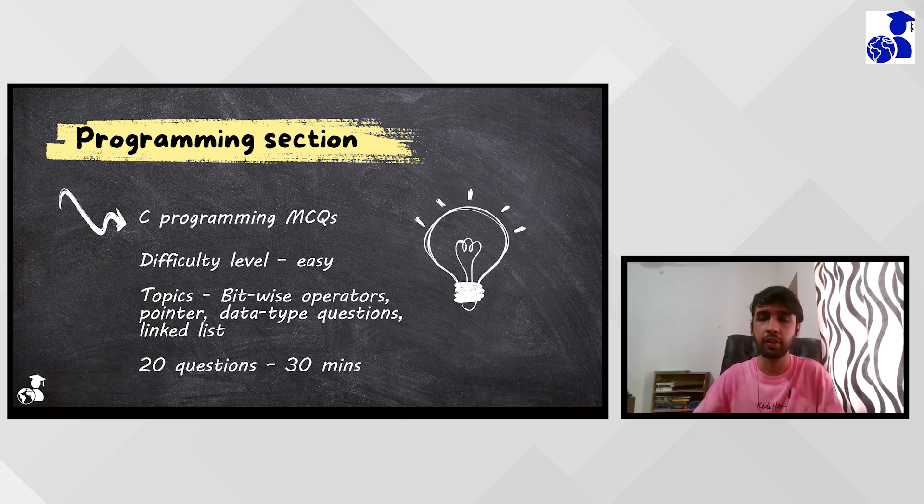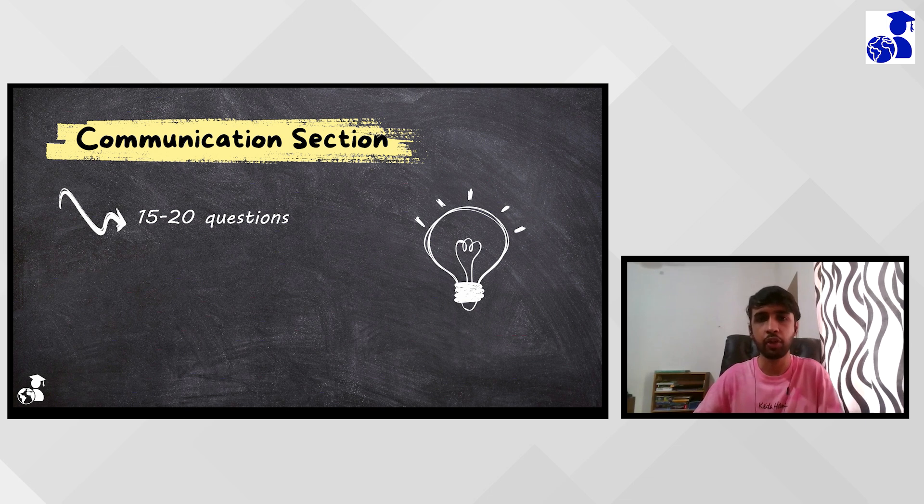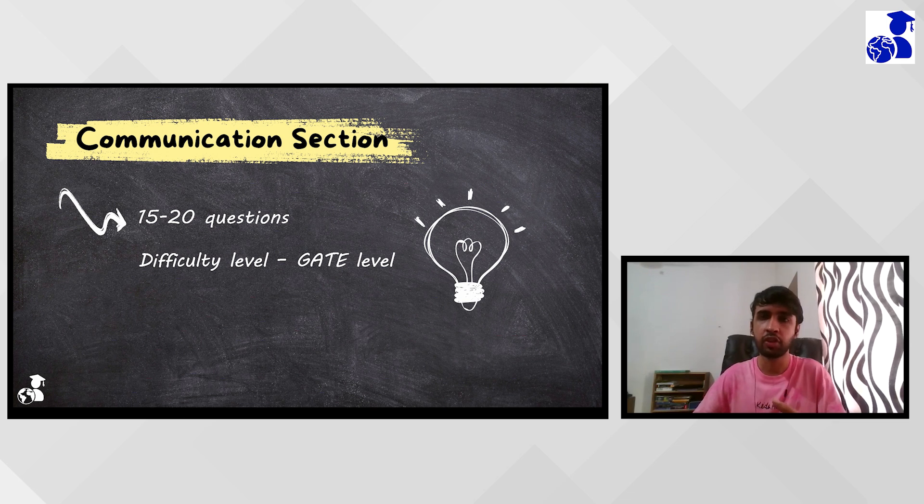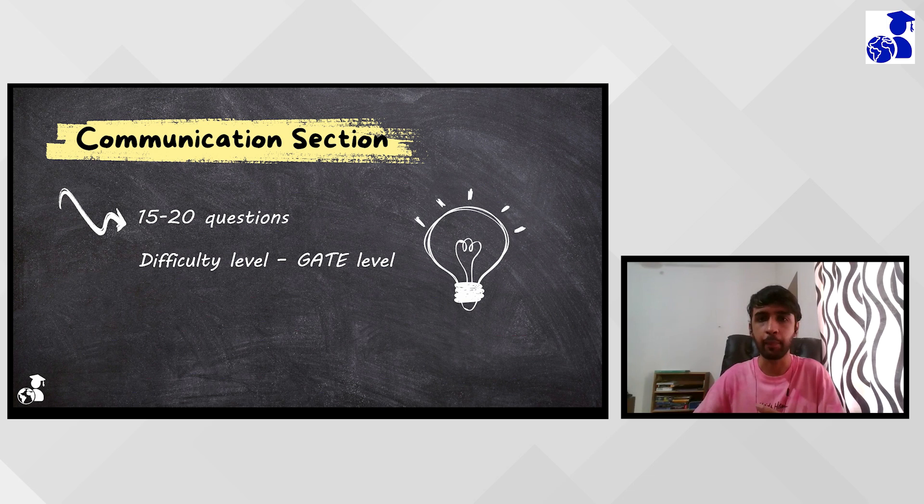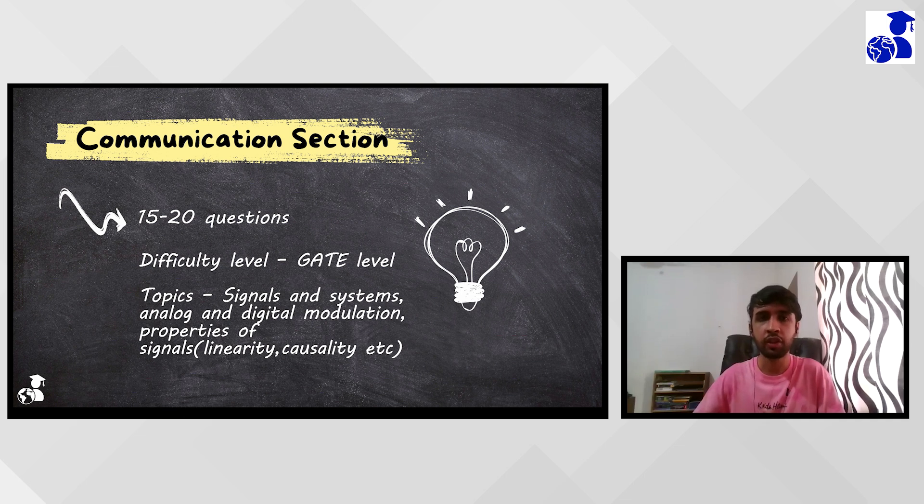Coming on to the last section, the last section had around 15 to 20 questions, which consisted of gate level communication questions. So in this case, the major topics which are to be covered are signals and systems, your communication systems questions, which includes analog modulation, digital modulation. And the main part consisted of signals and systems, which discusses the property of signals like linearity, causality, time invariance. So these were some important topics which were asked in the first section. So overall, the test difficulty level was from easy to mid, but the time allotted for each section was less. So you need to be really fast and have the answers ready just as you see the questions.